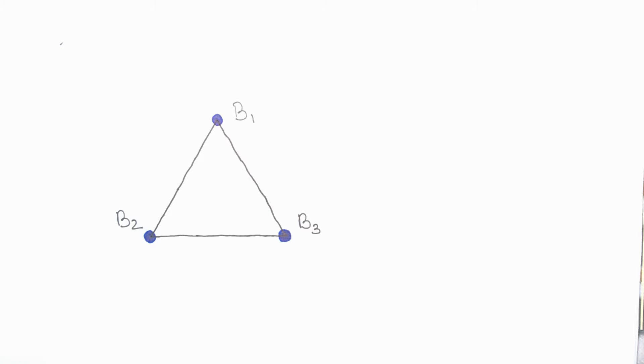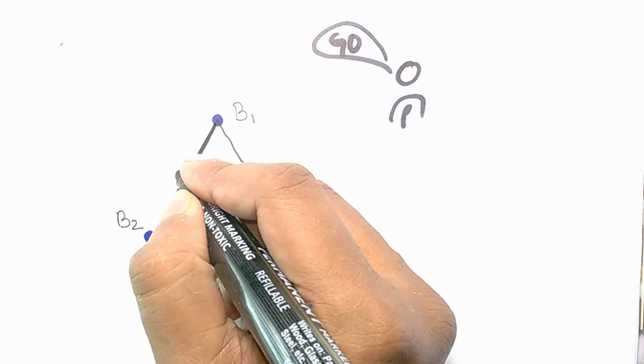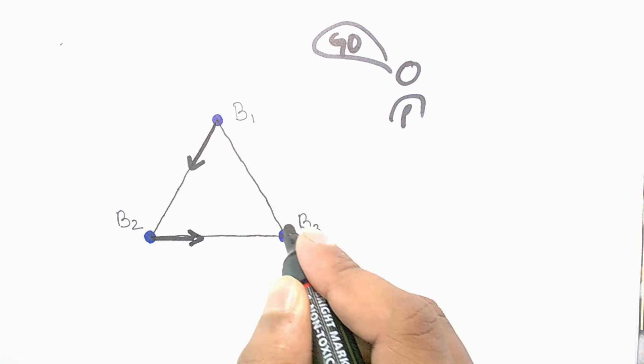Now what is going to happen is when you say go, then body one is going to move towards body two, and body two is going to move towards body three, and body three is going to move towards body one.